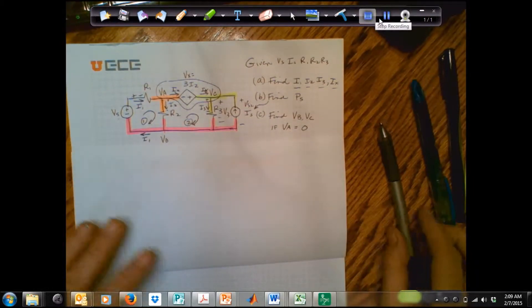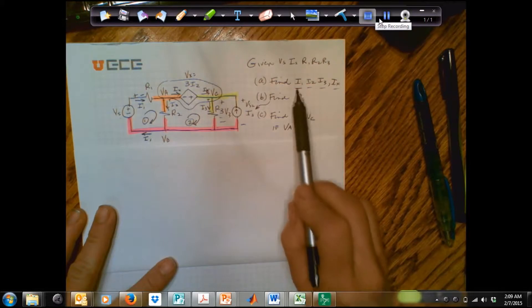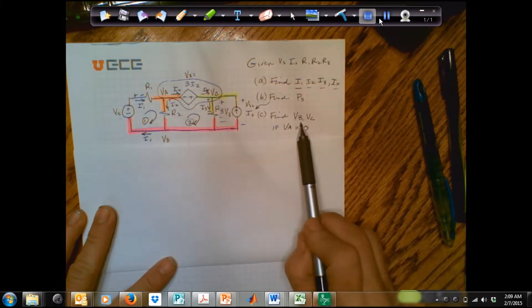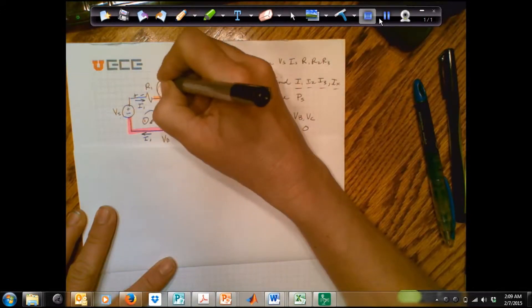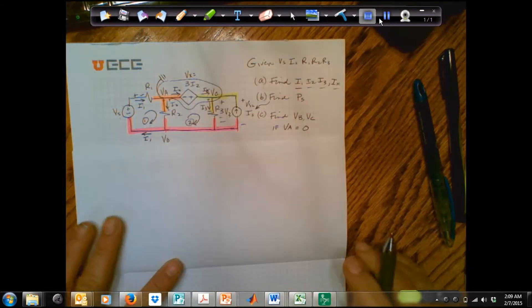Okay, one last part of our problem. Let's say that we have found our currents and our power, and we want to find our node voltages, particularly if we make this node voltage right here the ground. So we're going to ground that part of the circuit.